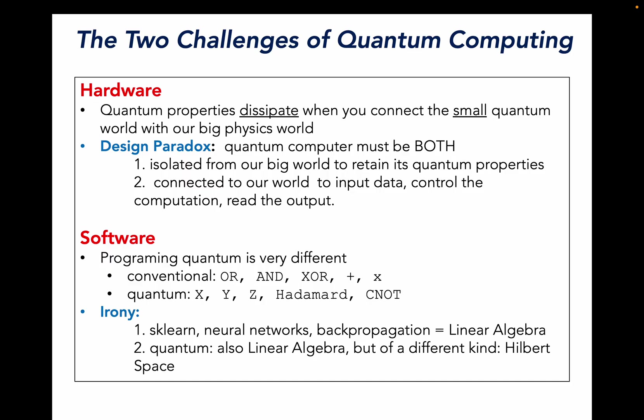The second challenge is software. Programming quantum is very different than conventional computers, which have gates like OR and AND and XOR and plus and multiplication. Quantum gates are entirely different and work in a different way. The irony here is that most of our data science tools are really based on linear algebra. And quantum is also linear algebra, but it's a different kind of linear algebra called a Hilbert space.